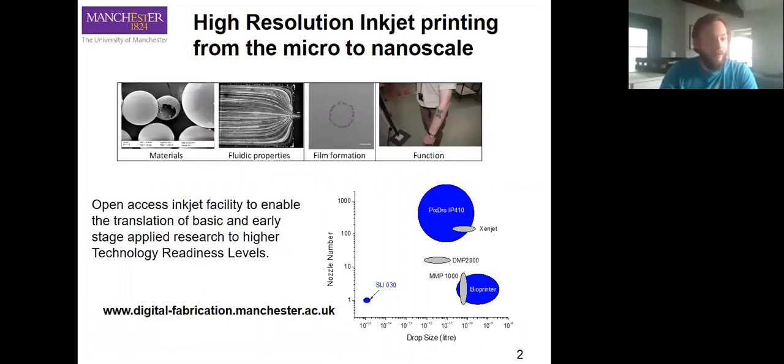First of all, the area we're involved in is the Centre for Digital Fabrication and OMIC in the Department of Chemistry. We focus partially on high resolution inkjet printing from the micro to nano scale. We cover various new materials, fluidic properties, film formation, and generally tend towards functions.